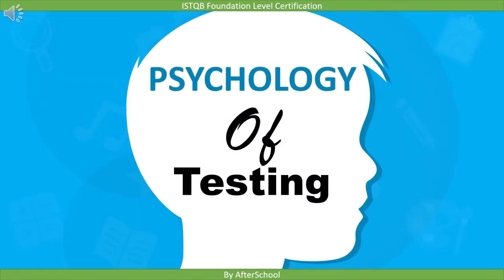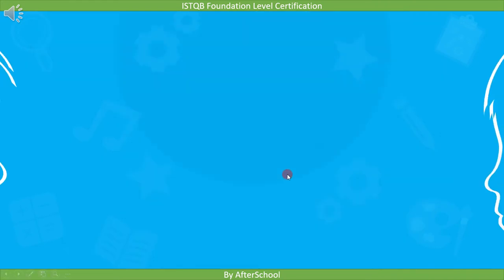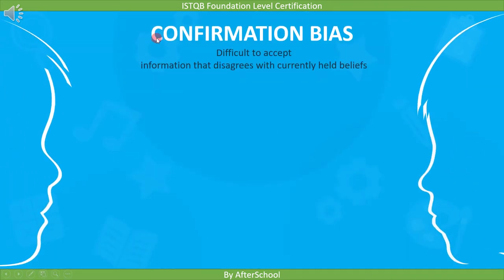Today we're covering the psychology of testing. The first thing we need to learn is the concept of confirmation bias. Here's the definition: it is difficult to accept information that disagrees with currently held beliefs. So when a person is faced with an idea that goes against what he believes, he will refuse to accept it.